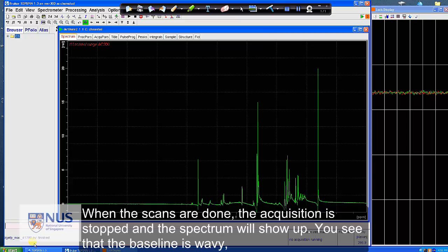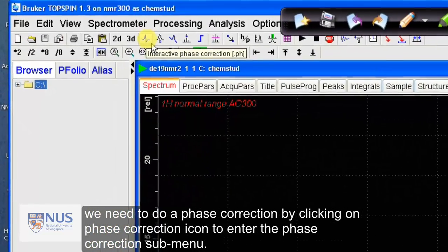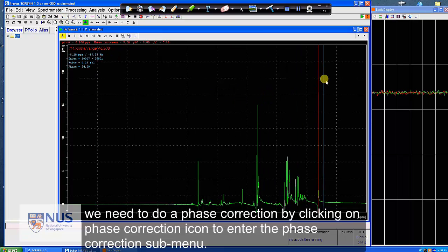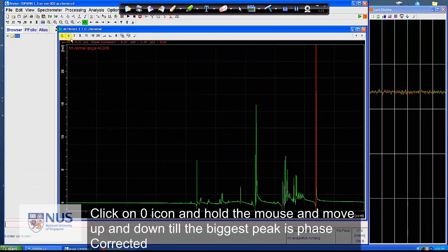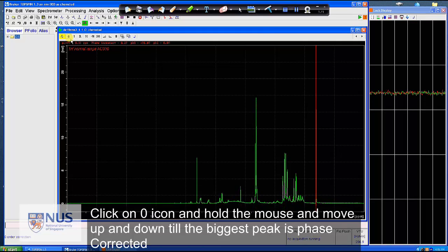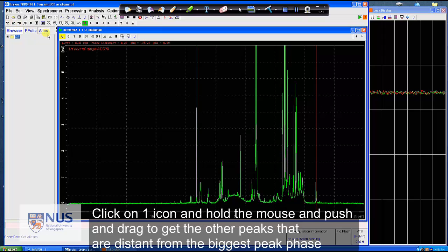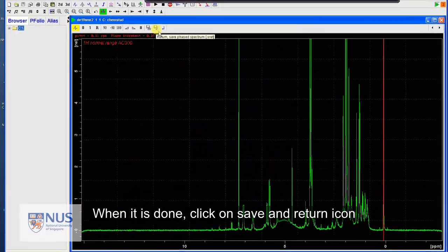You see that the baseline is wavy. Hence, we need to do a phase correction by clicking on the phase correction icon to enter the phase correction sub-menu. Click on zero icon and hold the mouse and move up and down until the biggest peak is phase corrected. Click on the icon 1 and hold the mouse and push and drag to get the other peaks that are distant from the biggest peak phase corrected. When this is done, click on the icon save and return.